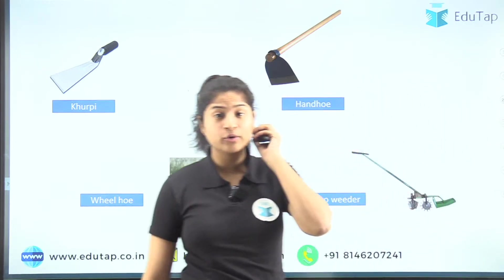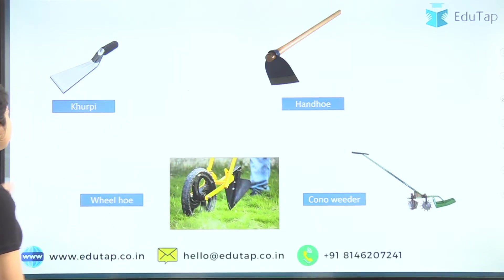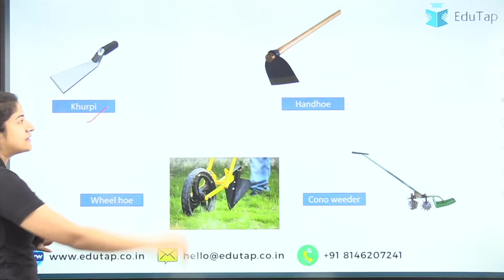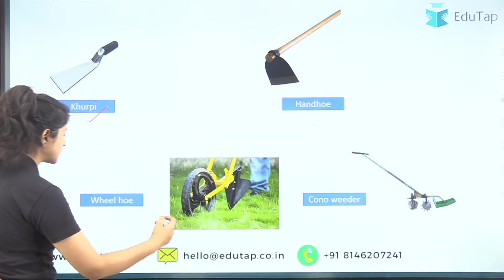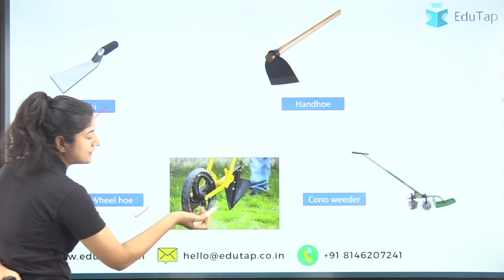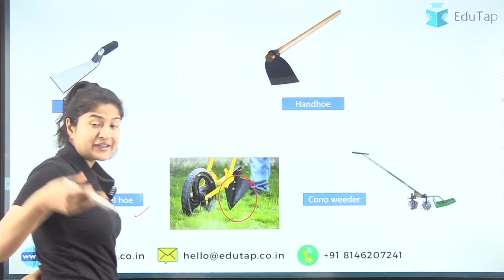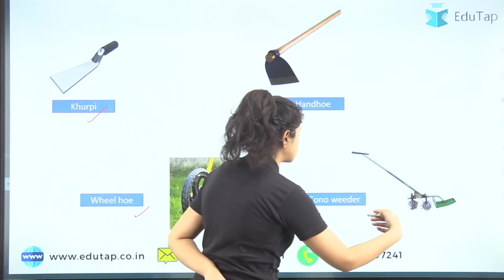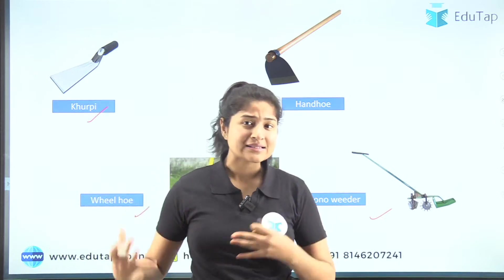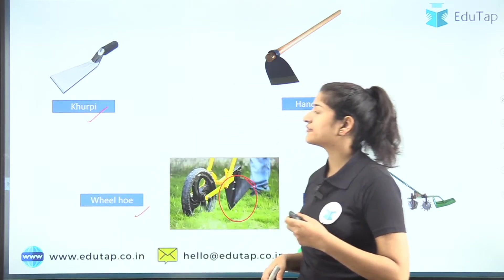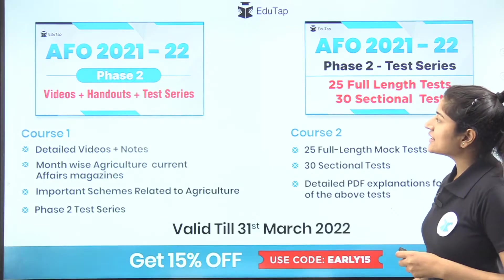For better retention, here you can see what these implements look like. First there is the hand hoe. Then there is the wheel hoe, wherein a wheel is used to uproot the weeds. Lastly, this is the Kono weeder, which is specially used where rice is planted. These are the different types of weeding implements.